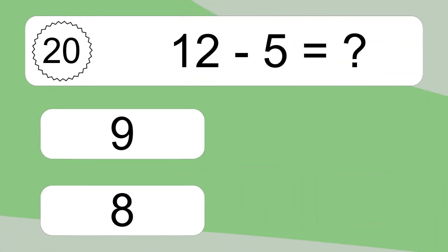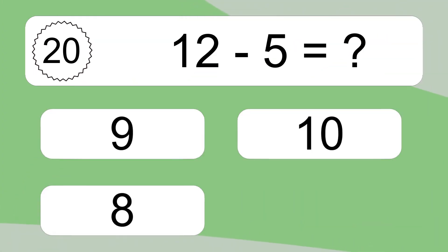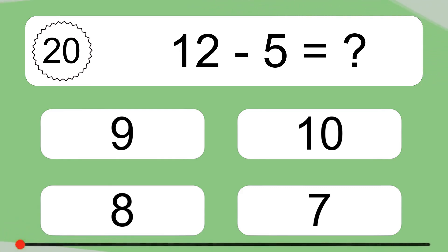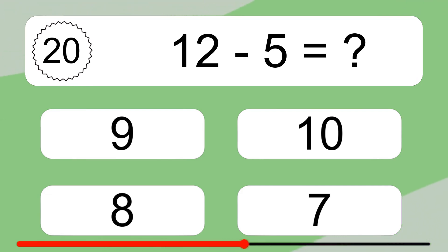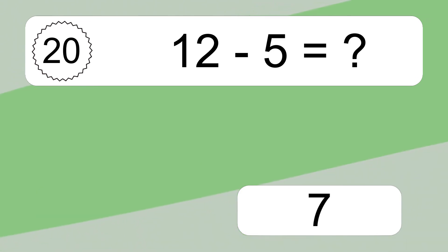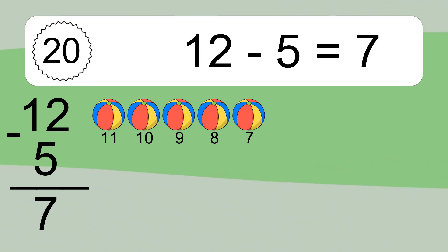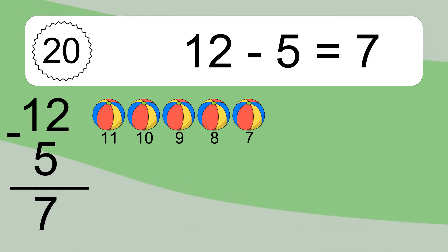12 minus 5 equals what? 12 minus 5 equals 7. Let's count it: 11, 10, 9, 8, 7.